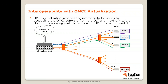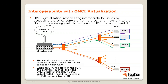How does OMCI virtualization resolve this? It resolves the interoperability issues by decoupling the OMCI software from the OLT and moving it to the cloud, thus allowing multiple versions of OMCI to run in parallel. You have the OLT — the white box — and then the virtualized OMCI in the cloud. The cloud-based management software knows which OMCI stack to use for which ONU. When an ONU registers on the PON, the software pushes the right OMCI for that ONU to the virtualized OLT.